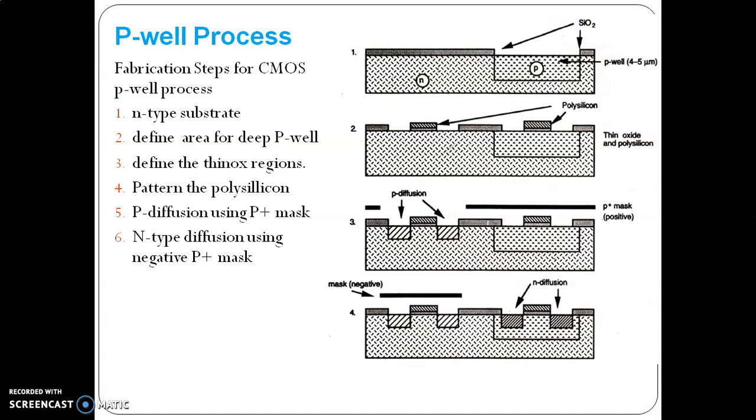The seventh step is define the contact cuts for your gate. Once you have defined the contact cut areas, put up the metal - aluminum metal - and pattern the aluminum metal to get the contact cuts. The ninth step is optional: if you want overglass, you can go ahead with the overglass.